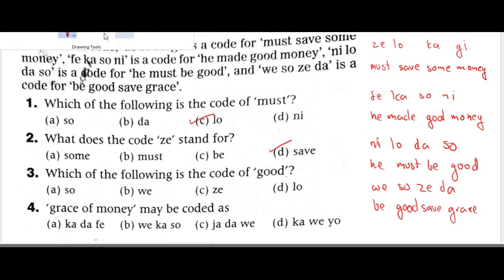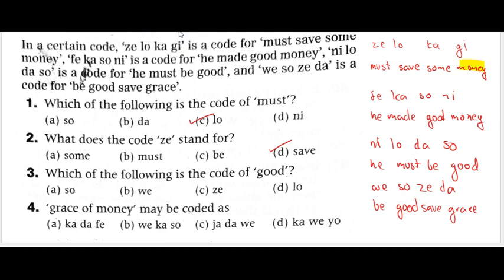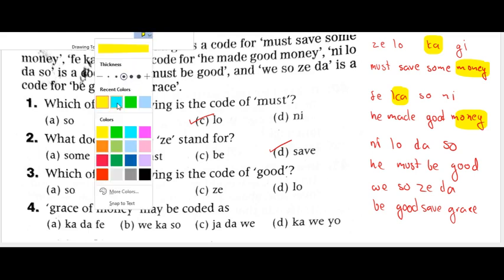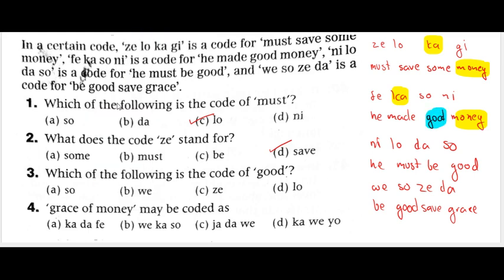In this problem, find the common elements. Where 'money' appears in both sentences, the common code is 'ka'. So money would stand for 'ka'. Next, find the common for 'good' — it appears in three sentences, and the common code is 'so'.